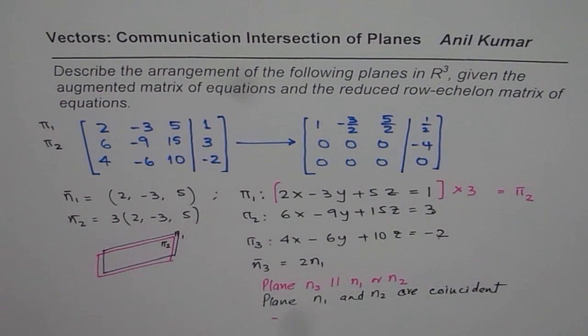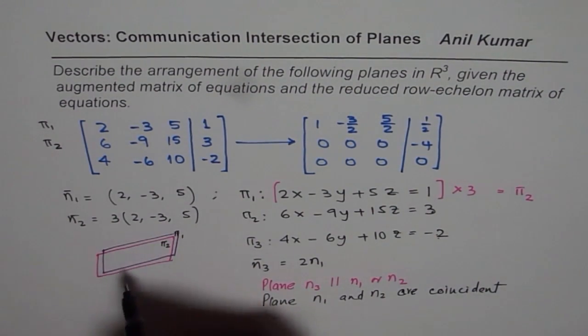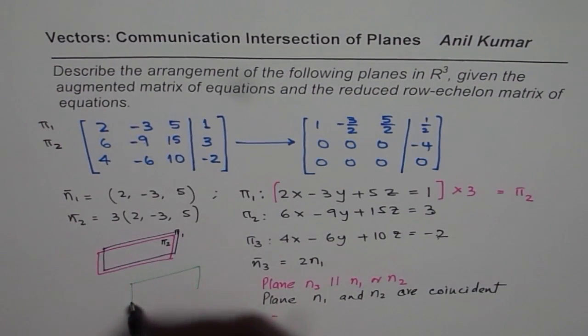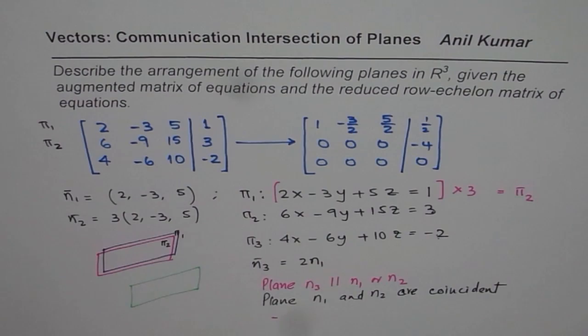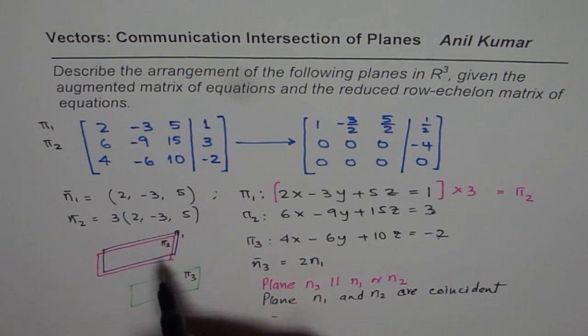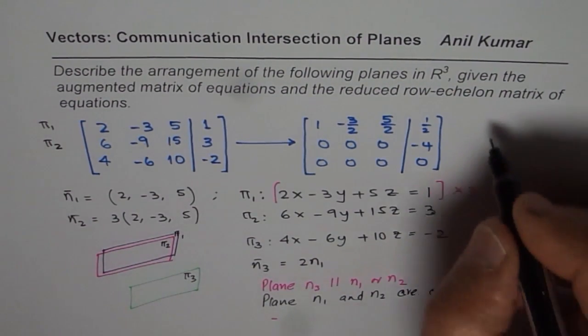So when we say that it is parallel then we are trying to say that the third plane is kind of like this. Now since the third plane π3 is parallel to the other two, there is no solution for these things. So this system is inconsistent.